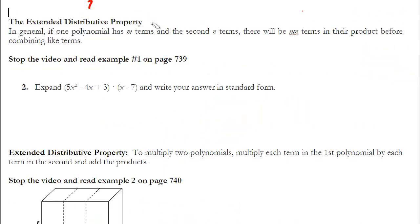One of the properties we'll be working with in this section is the extended distributive property, and I have it right here. The extended distributive property allows us to multiply polynomials together. What it says is that if you have m terms in one of the polynomials and n in the other, to get the number of terms you're going to have in your new polynomial, I'm multiplying those values together. When we combine like terms, the number of terms will go down if we can combine like terms.